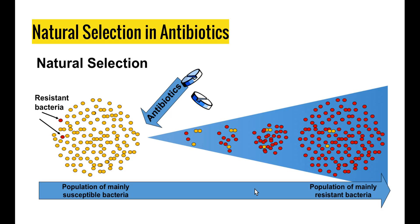When you take antibiotics, all the bacteria that haven't changed die off, but those few resistant ones are left. Since bacteria can reproduce extremely quickly, those resistant bacteria then begin to reproduce until we have the same population size as before — but now the antibiotics are useless because the bacteria are resistant to them. This is a real issue because doctors are over-prescribing antibiotics. Antibiotics are useless against viral diseases, but people go to the doctor and demand an antibiotic prescription even though they have a viral infection, not a bacterial infection.